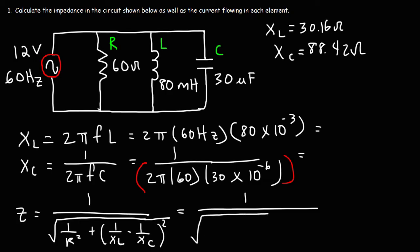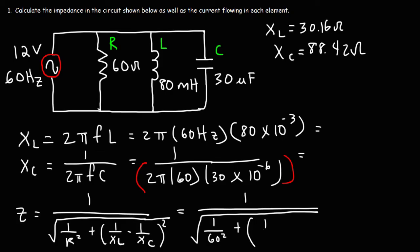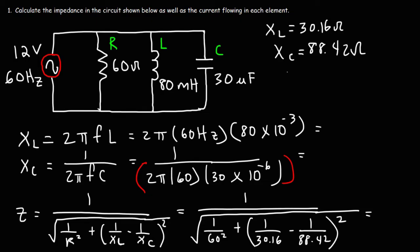Let's plug values into this formula. R is 60 ohms, XL is 30.16, and the capacitive reactance XC is 88.42. So it's 1 over 60 squared, plus 1 over 30.16 minus 1 over 88.42, and then squared. Make sure you square that result. The impedance of the circuit is 36.392 ohms.